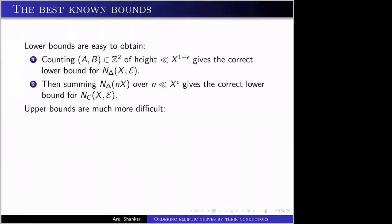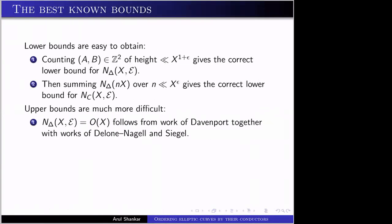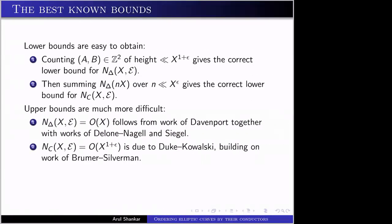Upper bounds are much more difficult. The upper bound N_Δ(X) = O(X) follows from Davenport's work together with work of Dellon, Nagell, and Siegel. When ordering by conductor, the best known result is O(X^{1+ε}), due to Duke and Kowalski, building on work of Brumer, Silverman, and Evers.